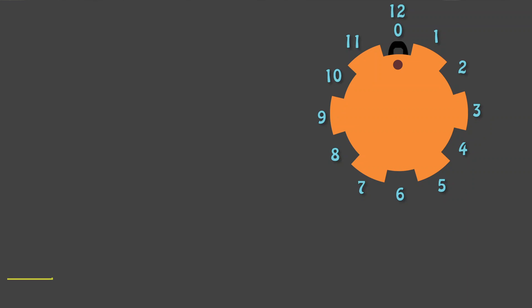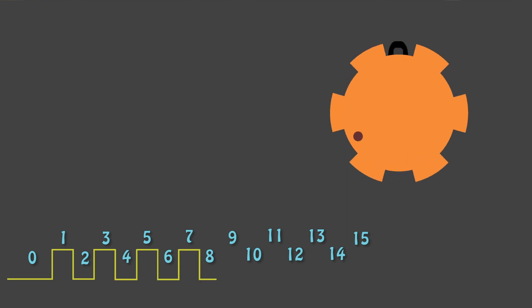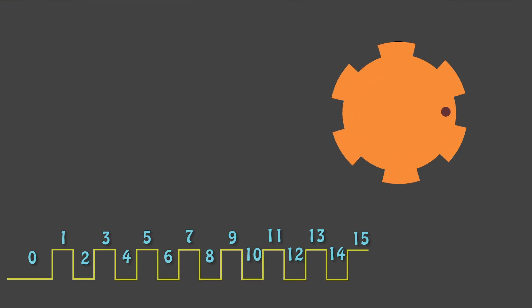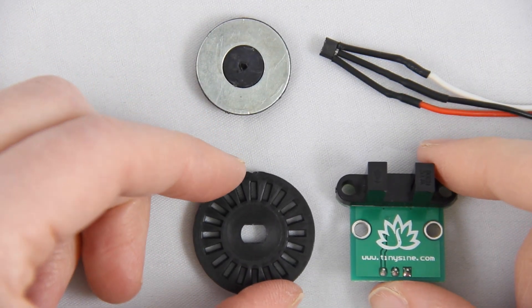These encoder discs have two states that cause a sensor to go between a high and a low. The key concept here is state changes — we need to track the number of states we're going through in order to know how far our wheel has rotated. For this encoder disc there are 12 state changes for every one rotation. So if we're tracking it and we see 15 state changes, we know that we've moved one and a quarter turns. Let's look at different types of encoder discs and how to use them to track state changes.